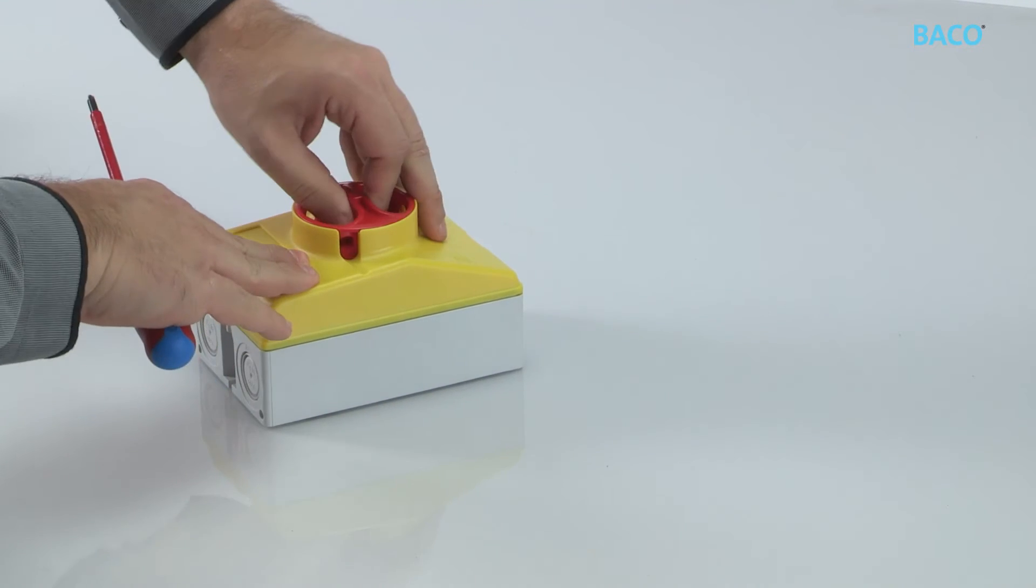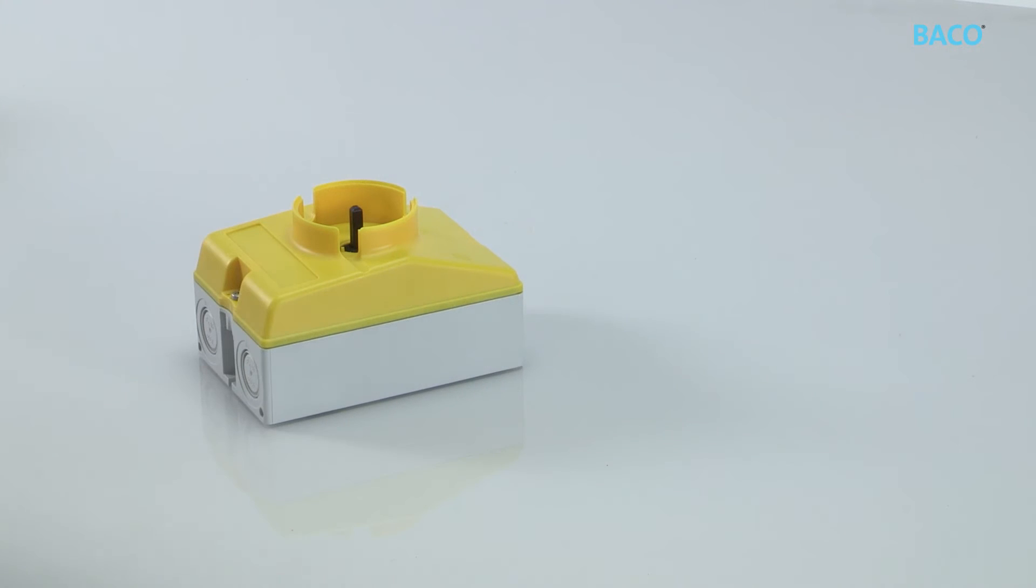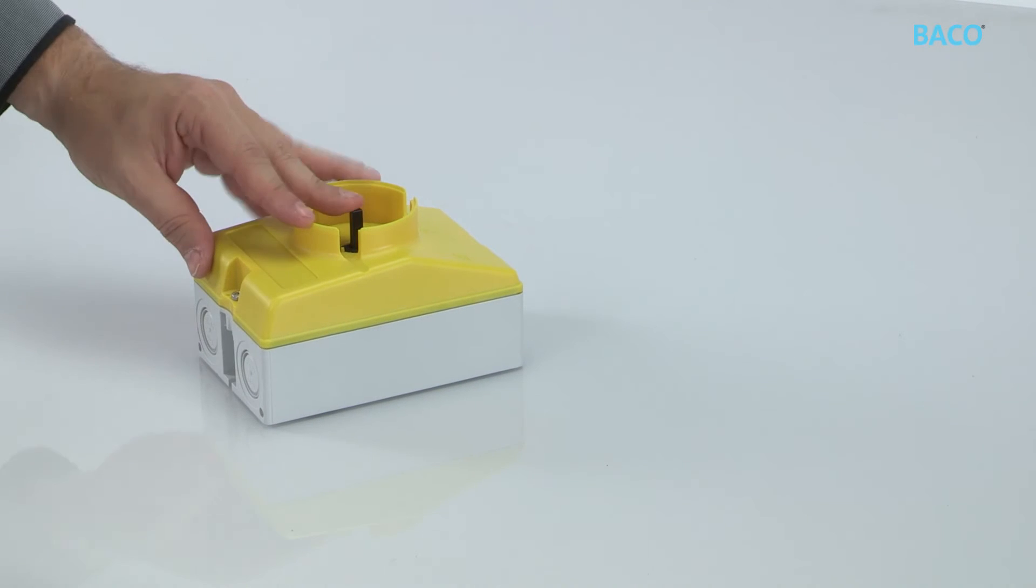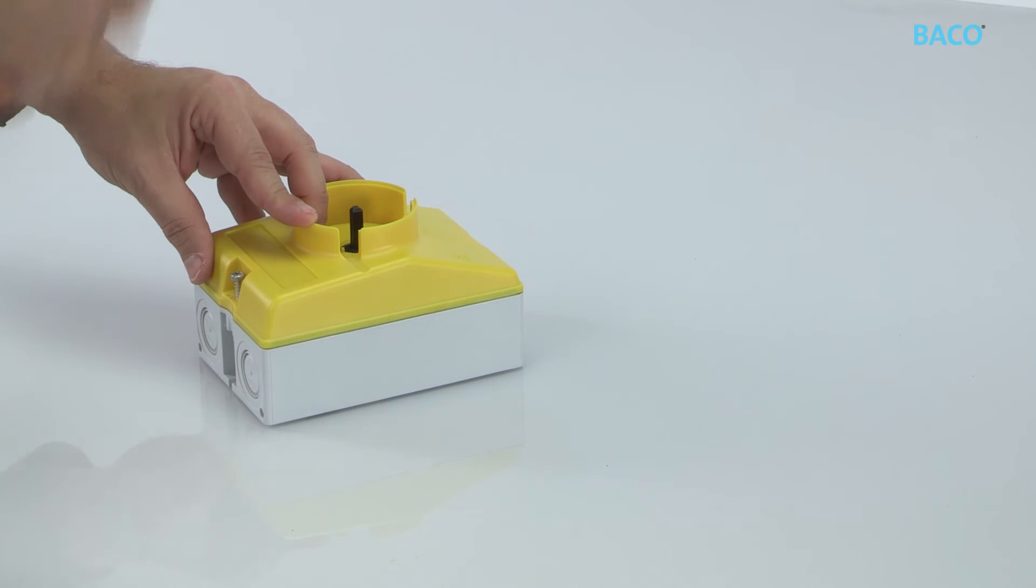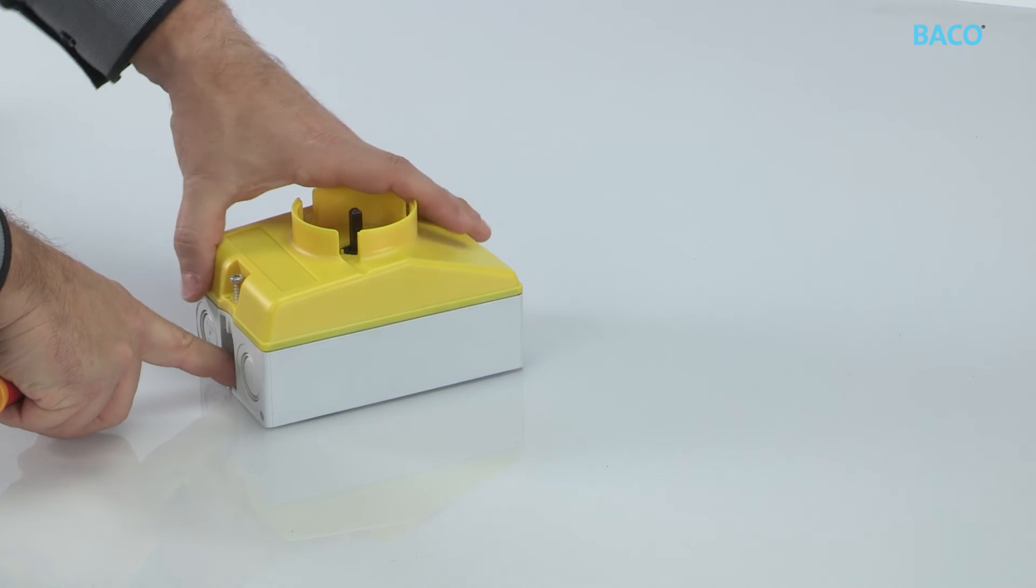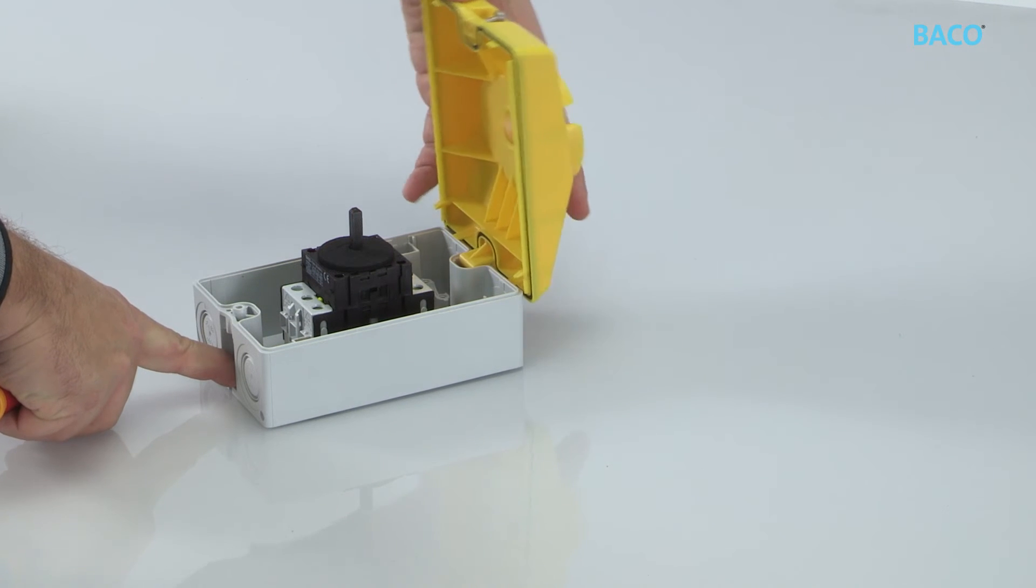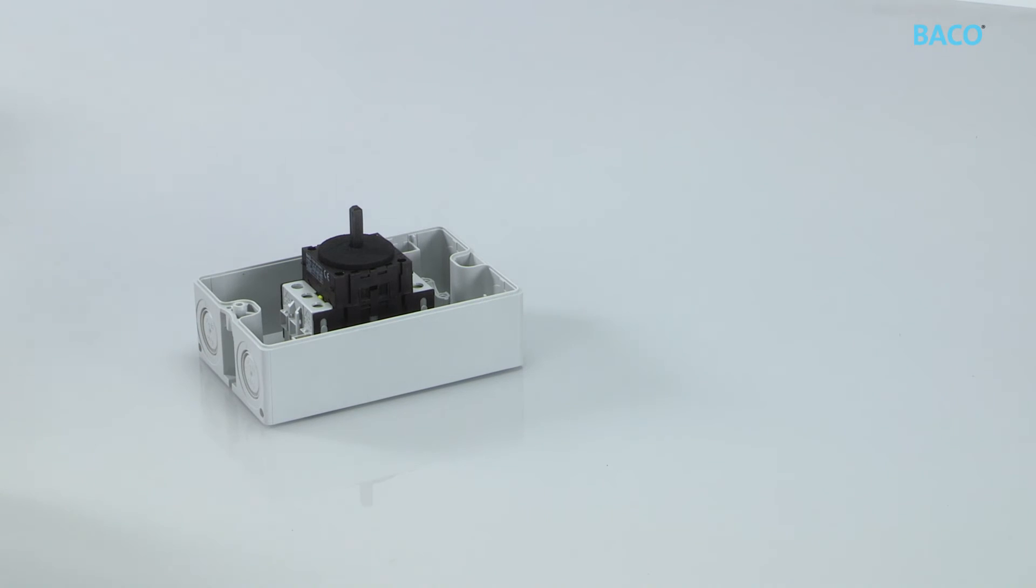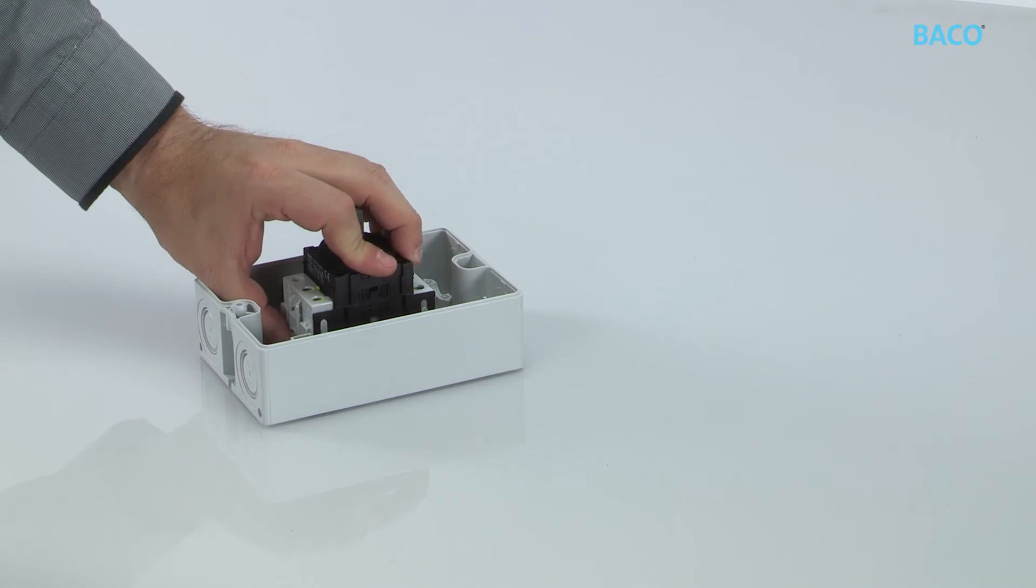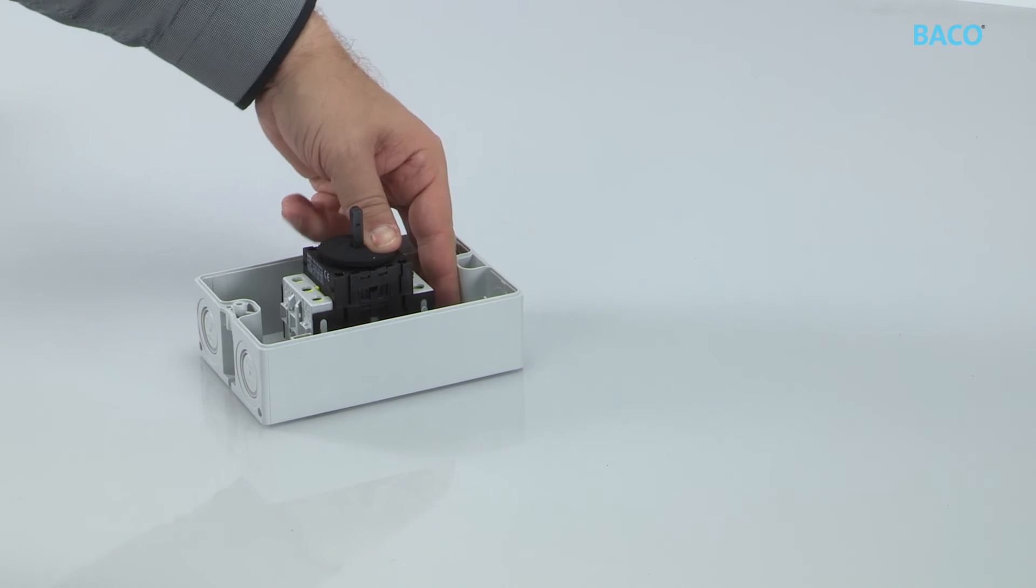Remove the red handle by loosening the side screw. Remove the single screw at the bottom. Remove the cover from the bottom up. Slide front the terminal bars to remove the three pole main block.